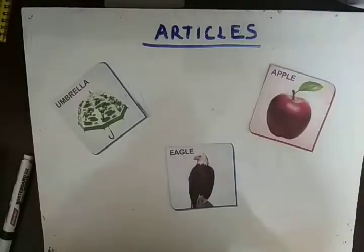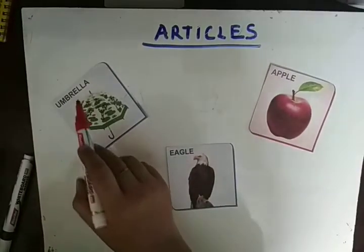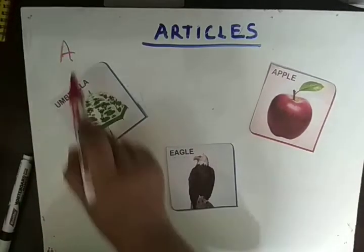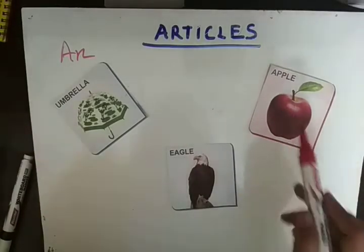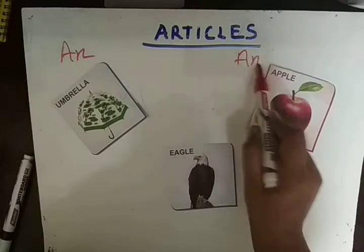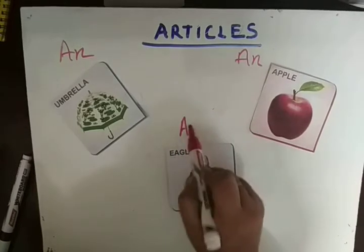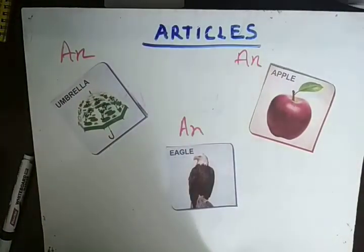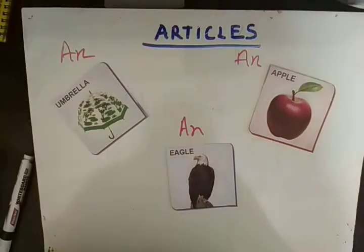Here I have written three words: umbrella, apple, eagle. Umbrella — it starts with the vowel sound 'u', so: an umbrella. Apple — it starts with the vowel sound 'a', so: an apple. Eagle — it starts with 'e', vowel sound. So: an umbrella, an apple, and an eagle. Wherever there is a vowel sound, we use AN.